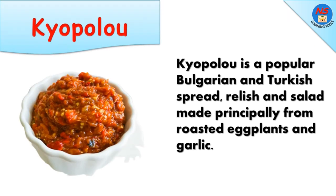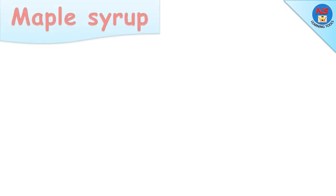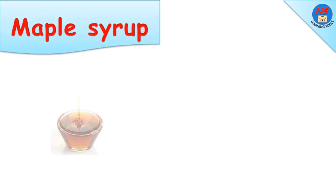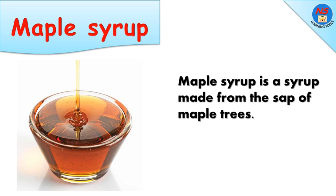Kupalu is a popular Bulgarian and Turkish spread, relish, and salad made principally from roasted eggplants and garlic. Maple syrup is a syrup made from the sap of maple trees.